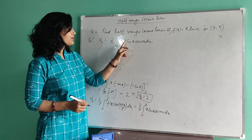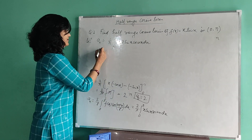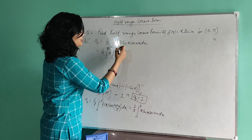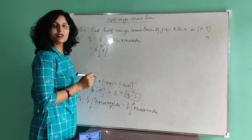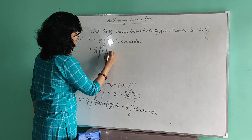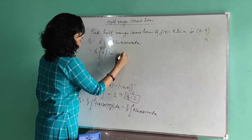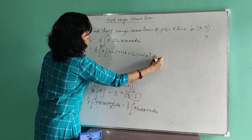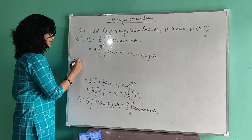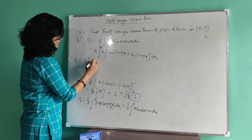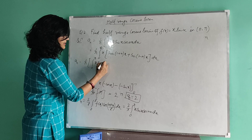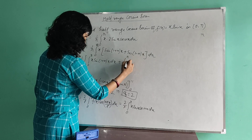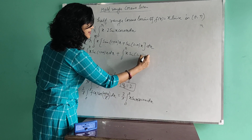We apply the product-to-sum formula 2·sin(a)·cos(b) = sin(a+b) + sin(a−b). So aₙ = (1/π)∫₀^π x·[sin((1+n)x) + sin((1−n)x)]dx. This gives two integrals: (1/π)∫₀^π x·sin((1+n)x)dx plus (1/π)∫₀^π x·sin((1−n)x)dx.